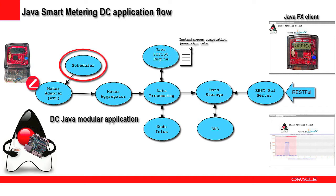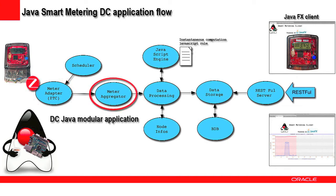First, the scheduler sends a read event every 12 seconds to the meter adapter. The meter adapter uses the Zigbee protocol to retrieve raw meter consumption data. The raw data is sent to the meter aggregator component, which converts raw data into JSON-structured lightweight COSM.